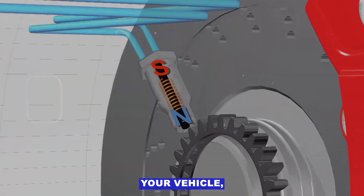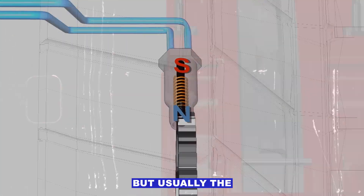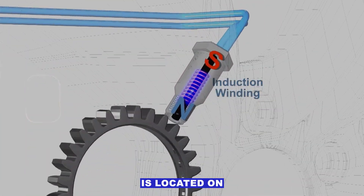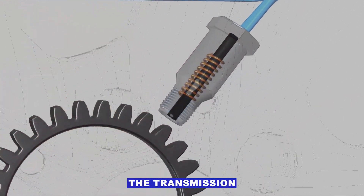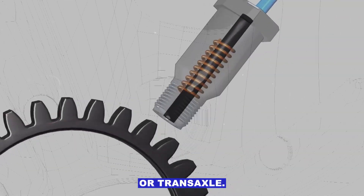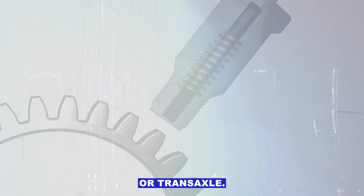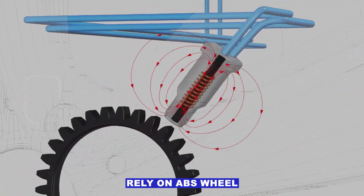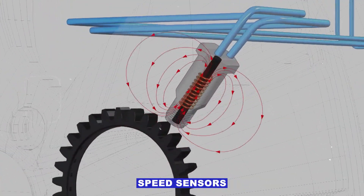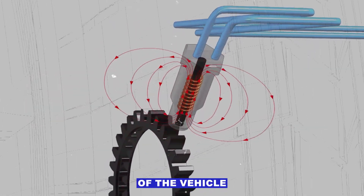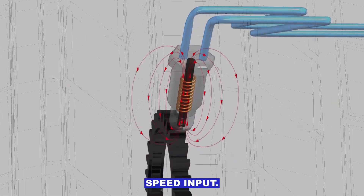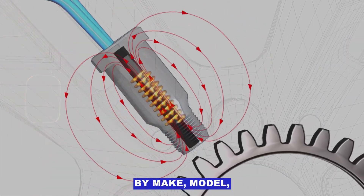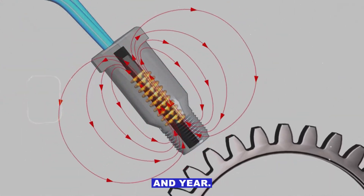Where is the speed sensor? This depends on your vehicle, but usually the speed sensor is located on or inside the transmission or transaxle. Some vehicles rely on ABS wheel speed sensors as part of the Vehicle Speed Input, so it really varies by make, model, and year.